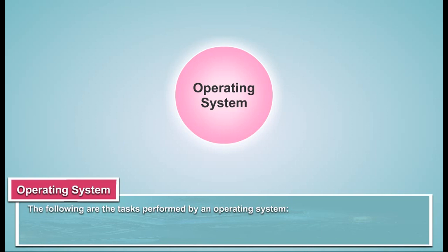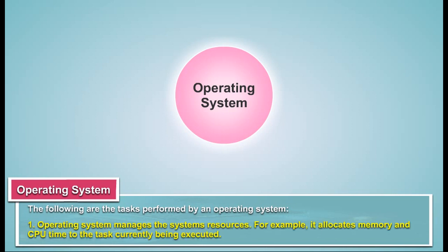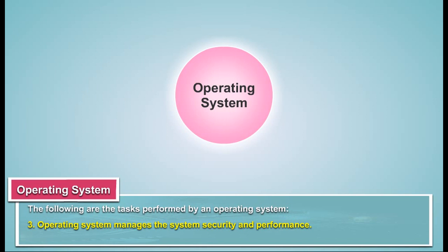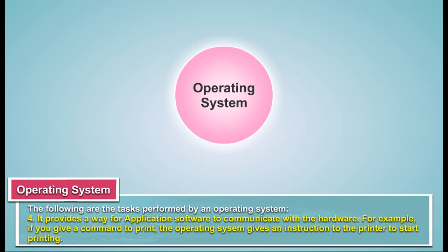The following are the tasks performed by an operating system. The operating system manages the system's resources — for example, it allocates memory and CPU time to the task currently being executed. It also manages the transfer of data to and from various peripherals such as keyboard, mouse, scanner, and printer. Additionally, the operating system manages the system's security and performance, and provides a way for application software to communicate with the hardware.